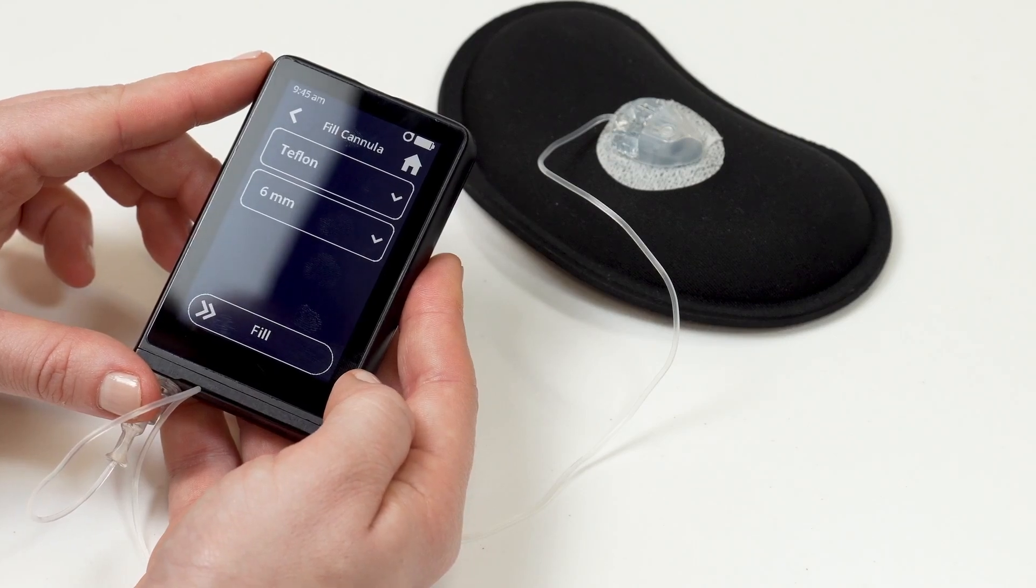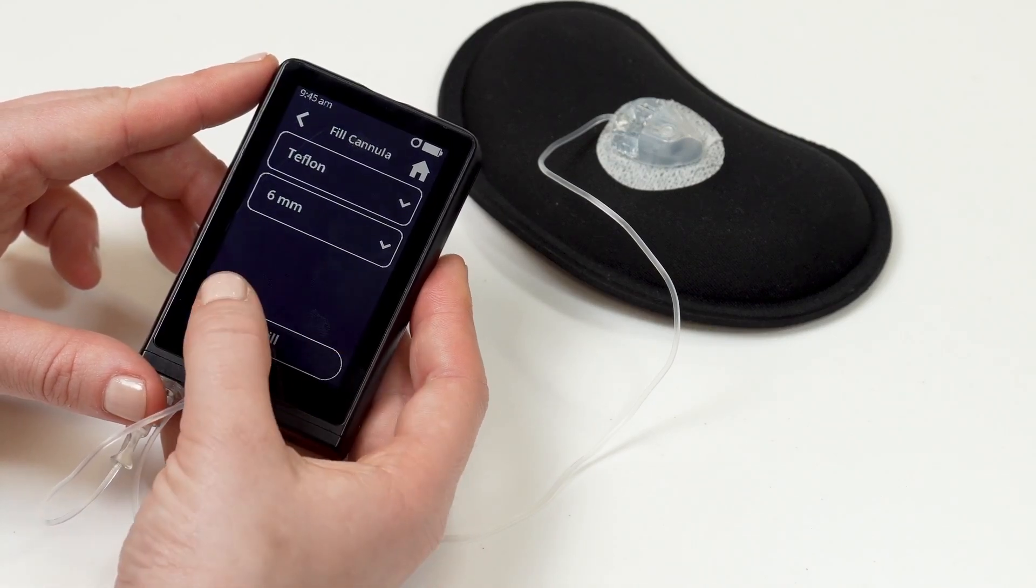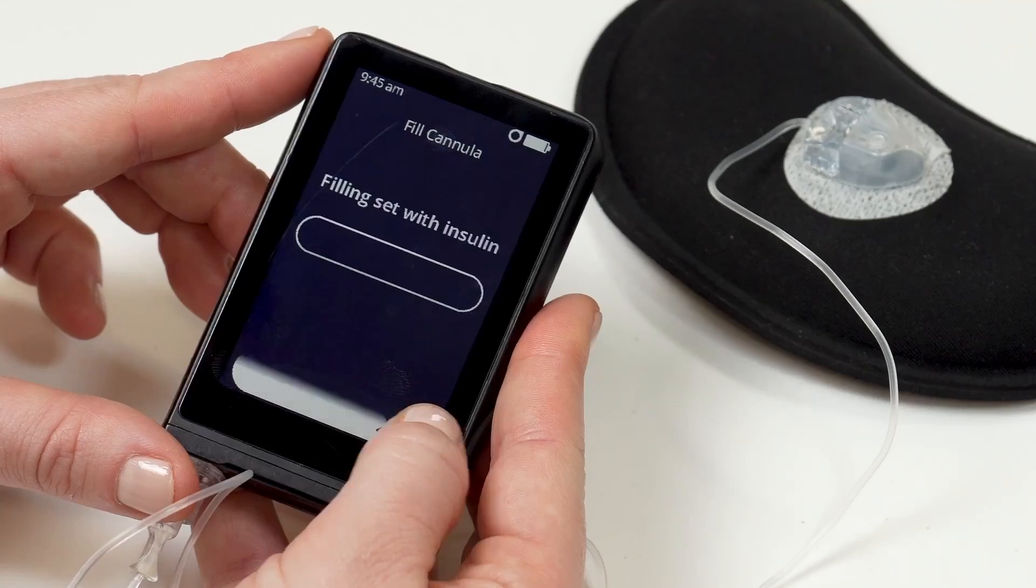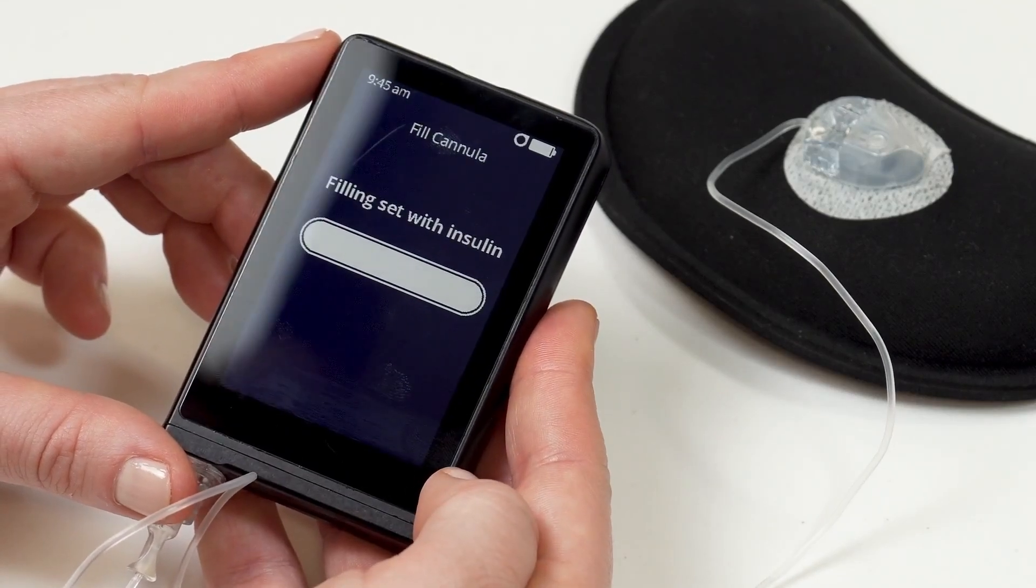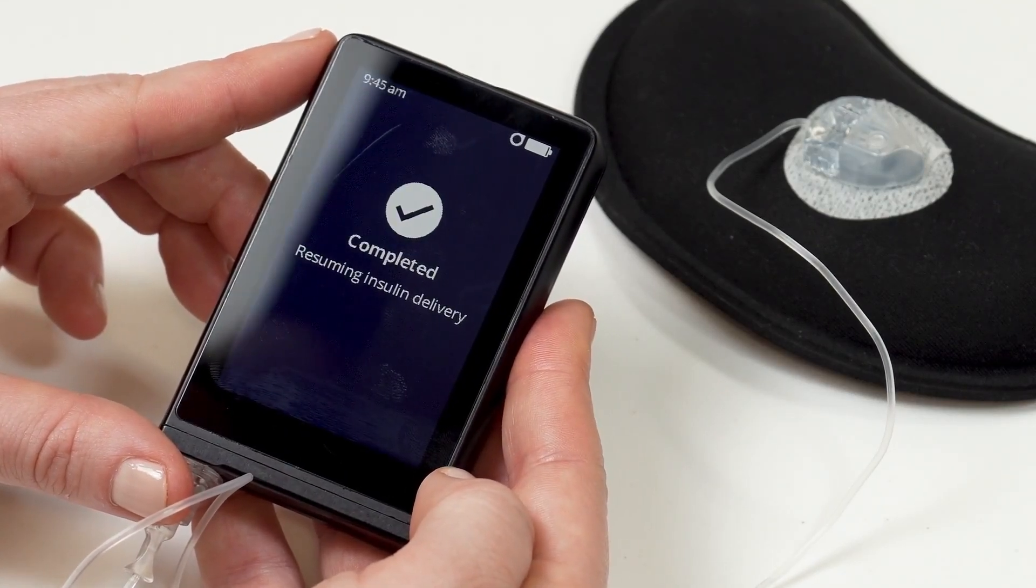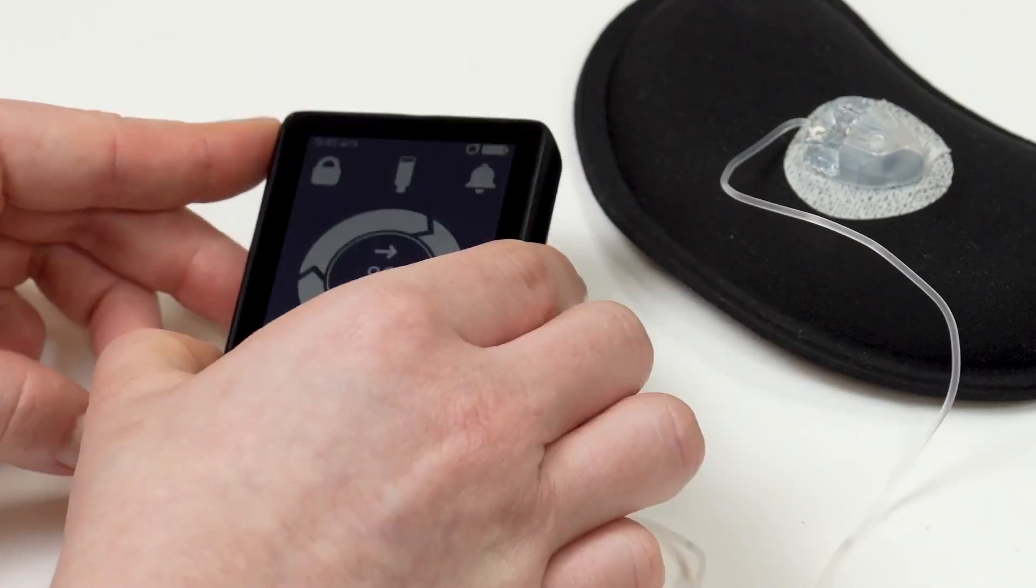The inset uses a teflon cannula. Confirm the teflon cannula and 6mm cannula length are listed. Swipe the fill slider to the right to fill your cannula with insulin.